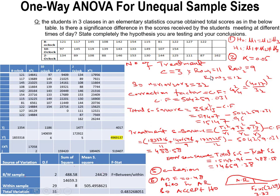In each treatment, the sample sizes are different. In the first treatment, there are 11 observations; in the second, 9; and in the third, 12. To calculate N, because the sizes differ, we add them: 11 plus 9 plus 12, giving us a total number of observations N = 32.